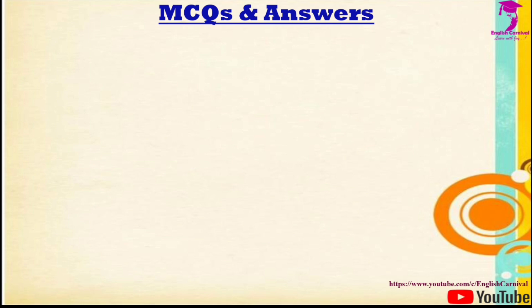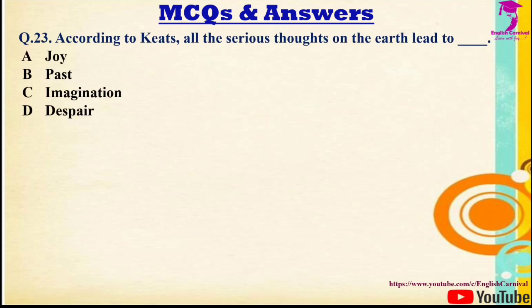Question 23: According to John Keats, all the serious thoughts on the earth lead to — Options: A) Joy, B) Past, C) Imagination, D) Despair. The correct answer is D — Despair.